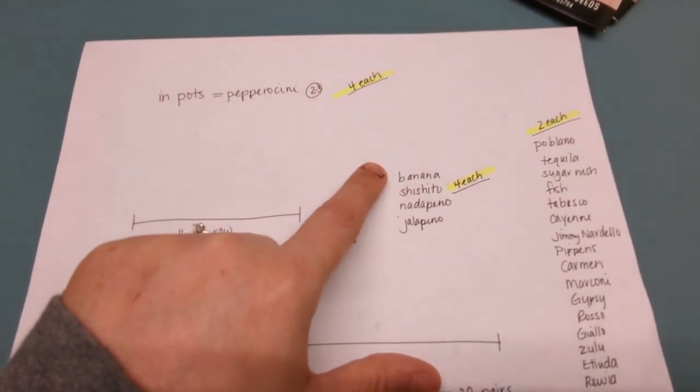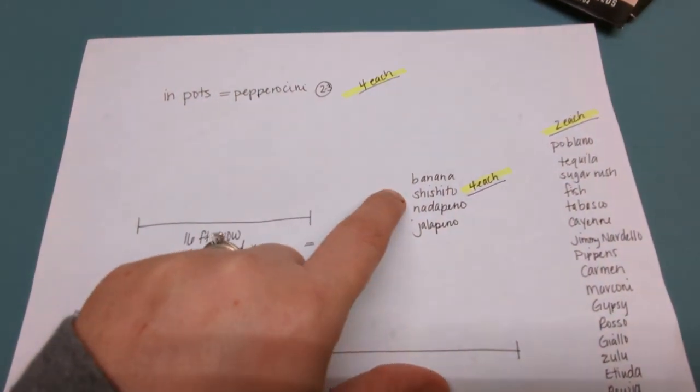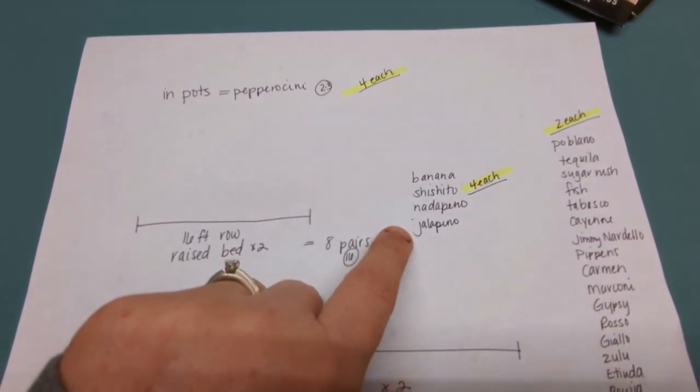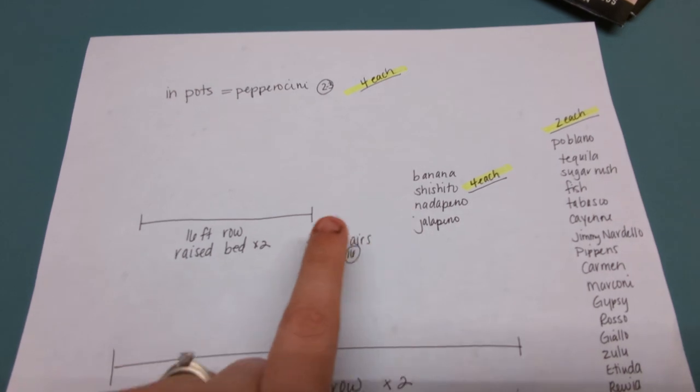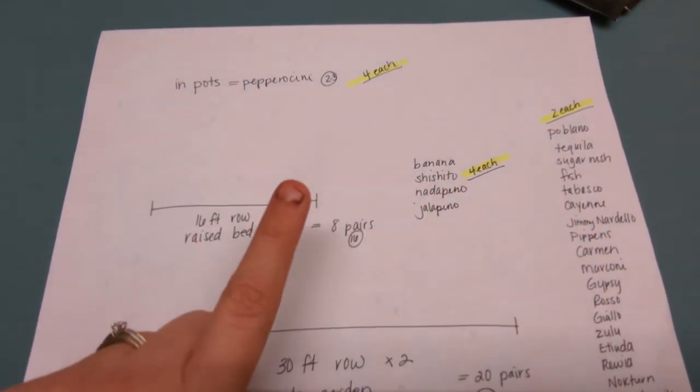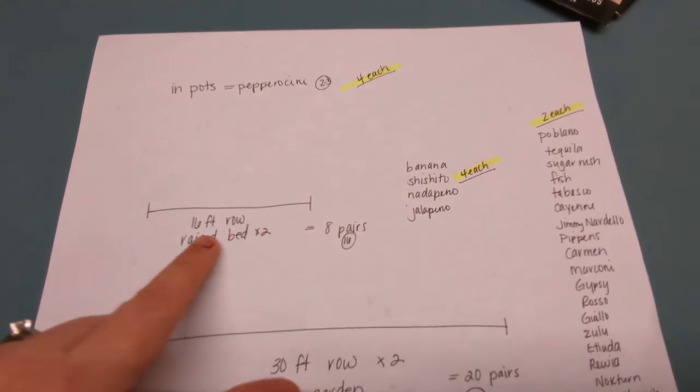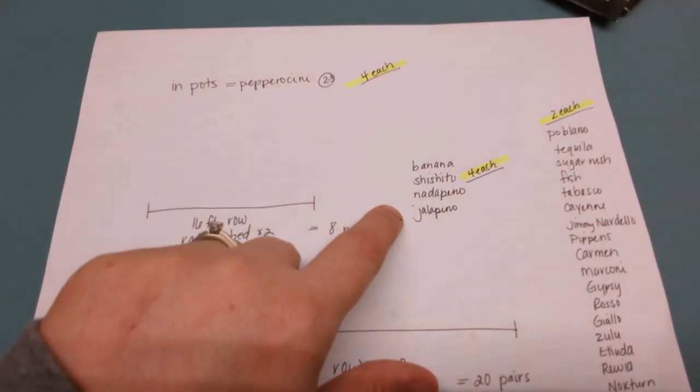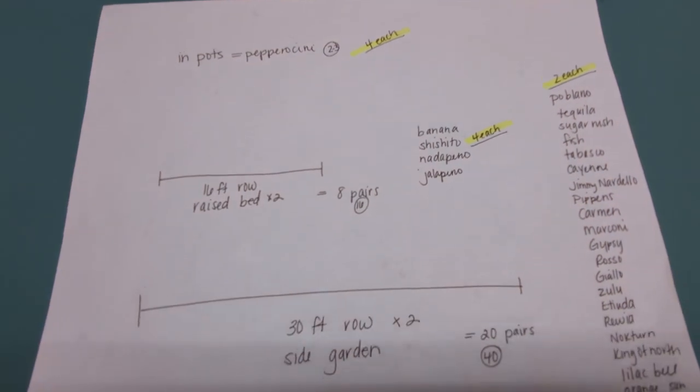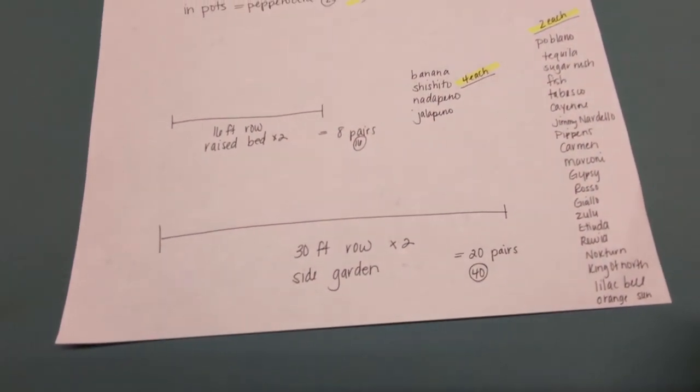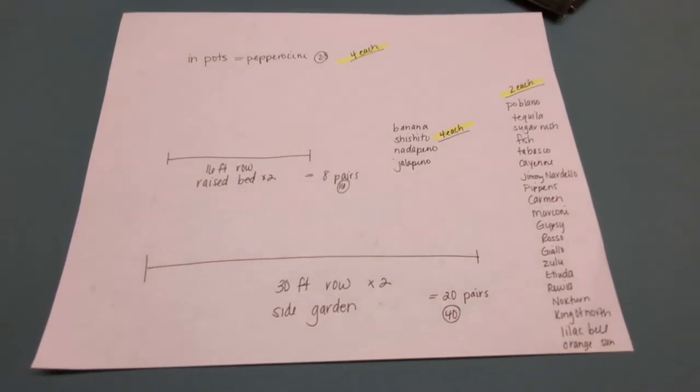Banana, because that's my family's favorite pepper to munch on. Shishitos, because we grew those last year and loved cooking them. Natapenos and jalapeños. And what I'm going to do is put those on either end. So I'm going to tell my daughter, you can eat these ones, but if you eat those ones, you're in for a surprise. And then I'll put my banana and my shishito in the middle because I want to make cowboy candy this year, which is just pretty much canned candied peppers. It's fantastic and my husband loved it.